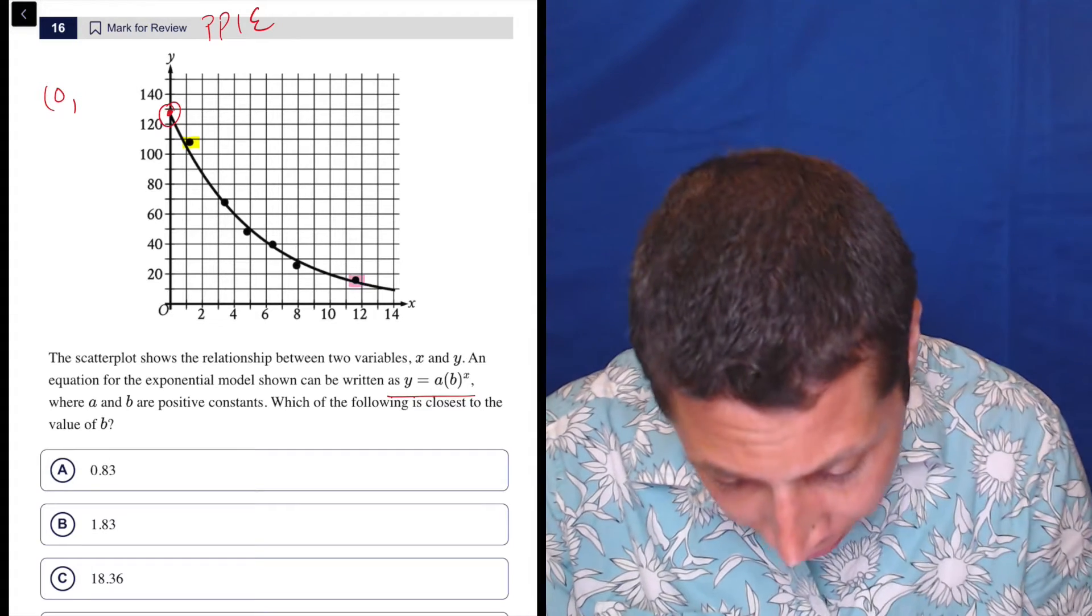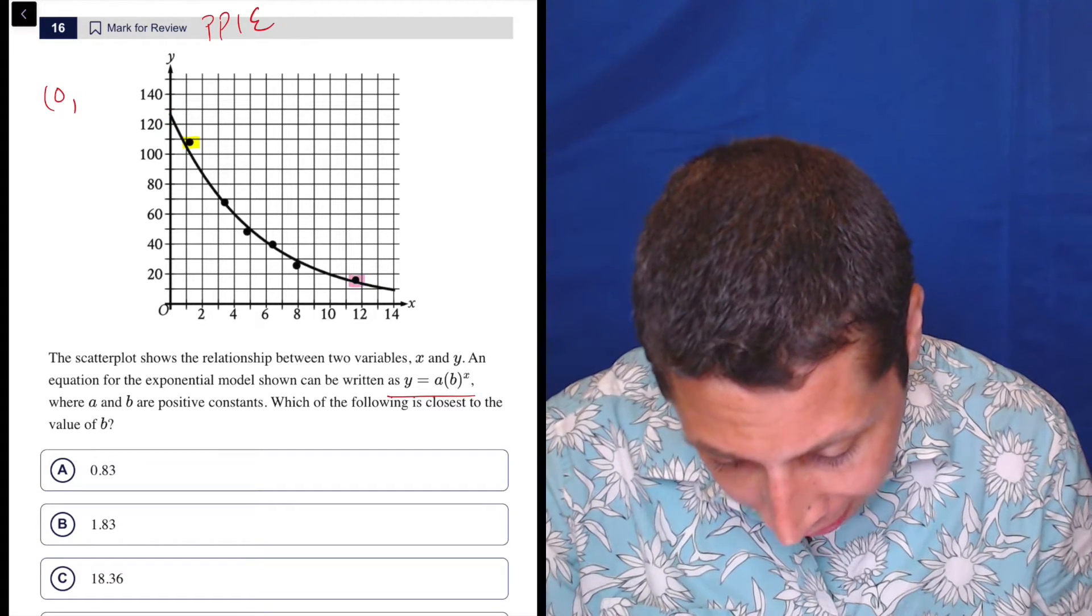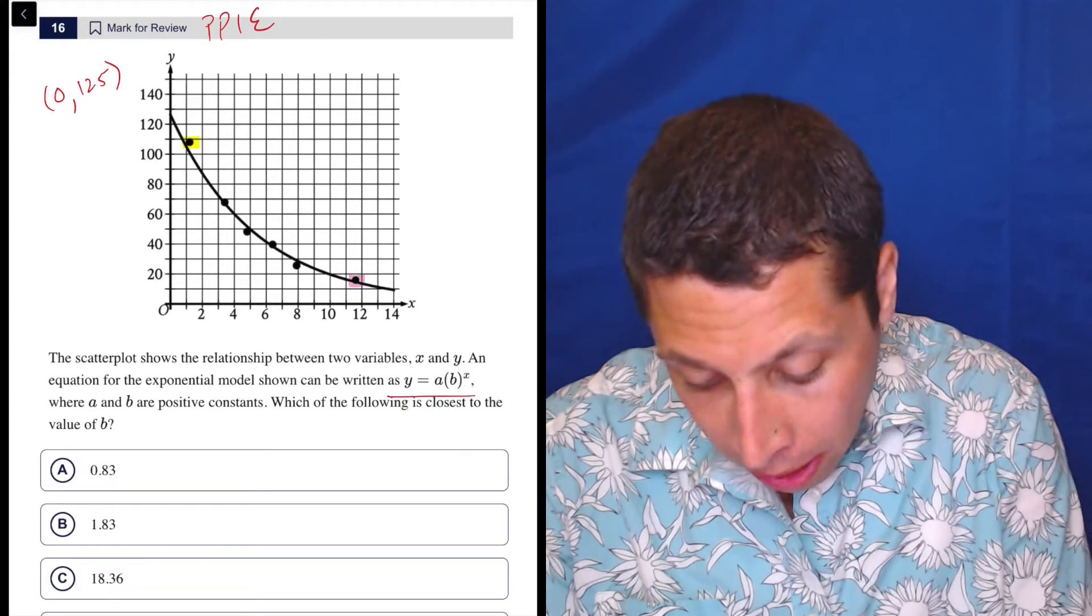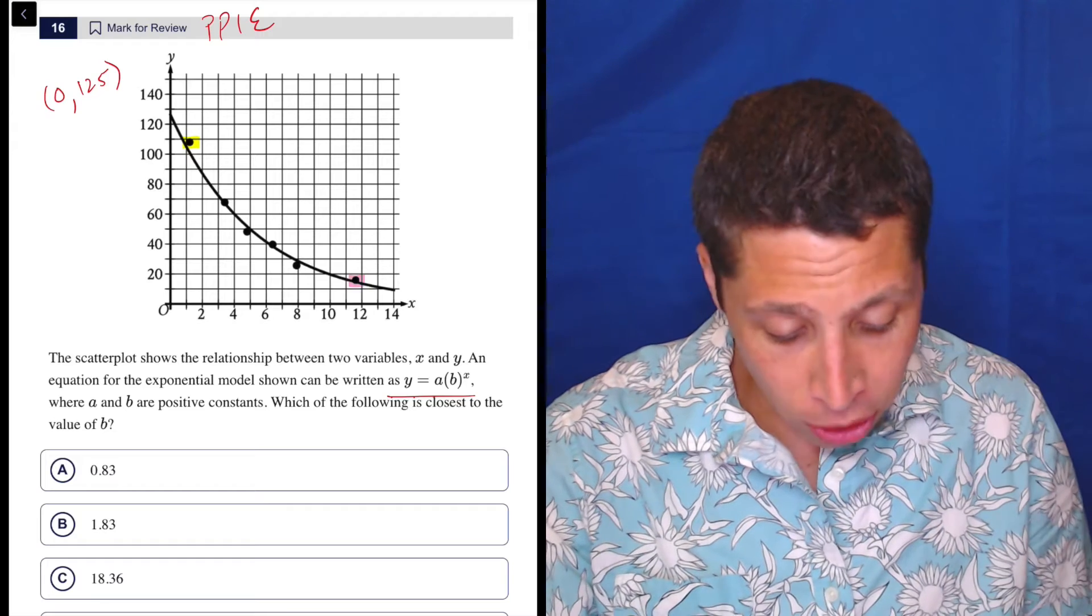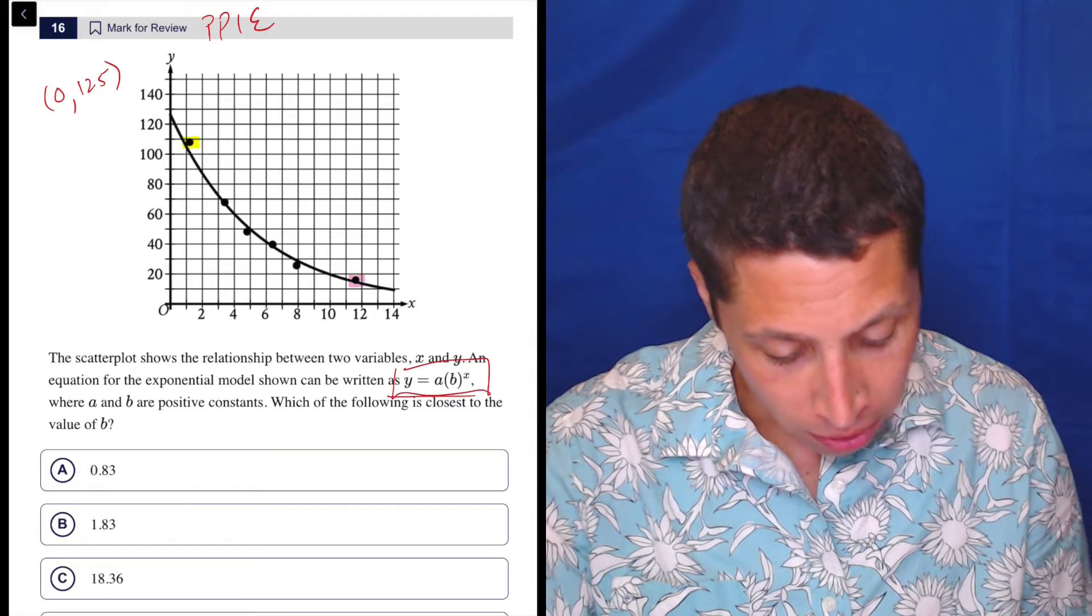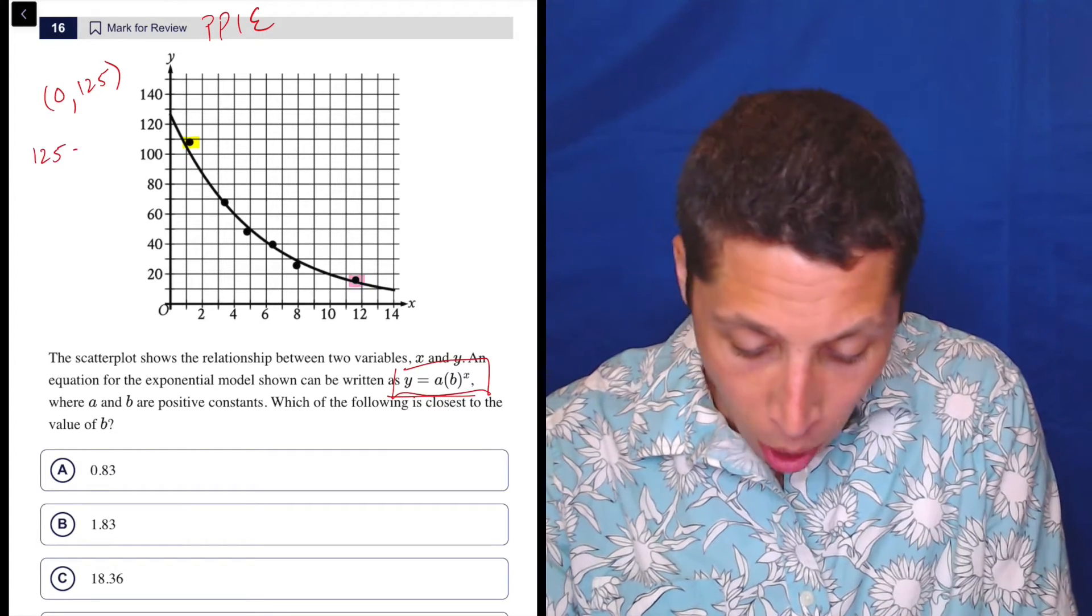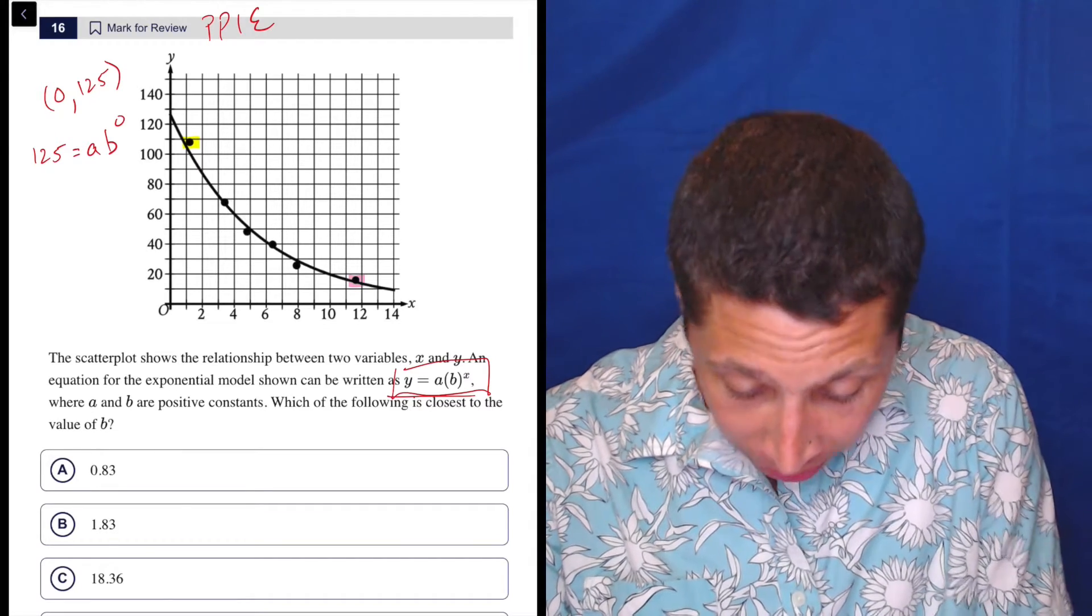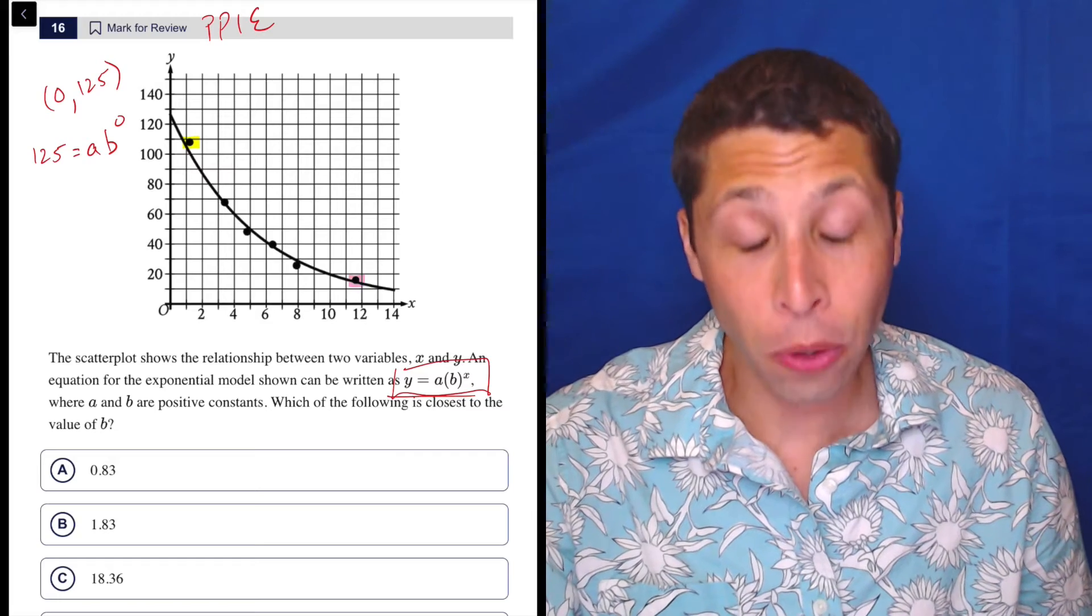So in this case, let's say this point is something like zero is my x. And it looks kind of like 130. So I'd go with that. Maybe 125. So let's do 125 and basically just plug that in the equation. So here's our equation. So 125 is the y. We don't know a, we don't know b, but we know x is zero.